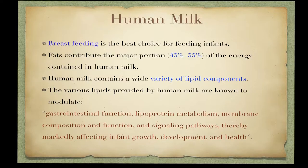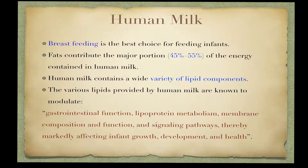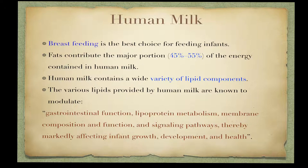Breastfeeding is the best choice for feeding infants. Fats contribute the major portion — 45 to 55 percent — of the energy contained in human milk. Lipids are the dominant provider of energy, contributing 90 percent of the energy retained by infants during the first six months. Lipids are also an efficient source of energy deposition; the energy cost to synthesize and store fat from glucose is 25 percent, whereas it is only 1 to 4 percent when lipid is the substrate.